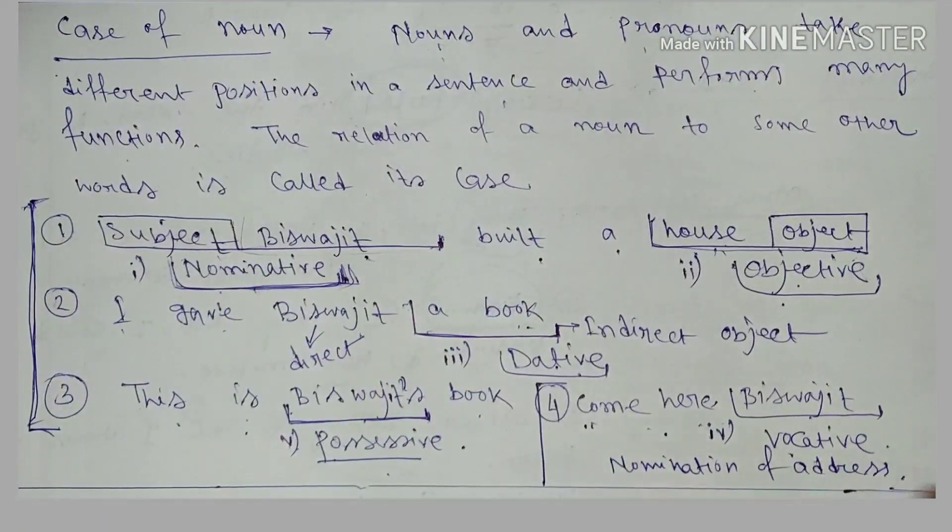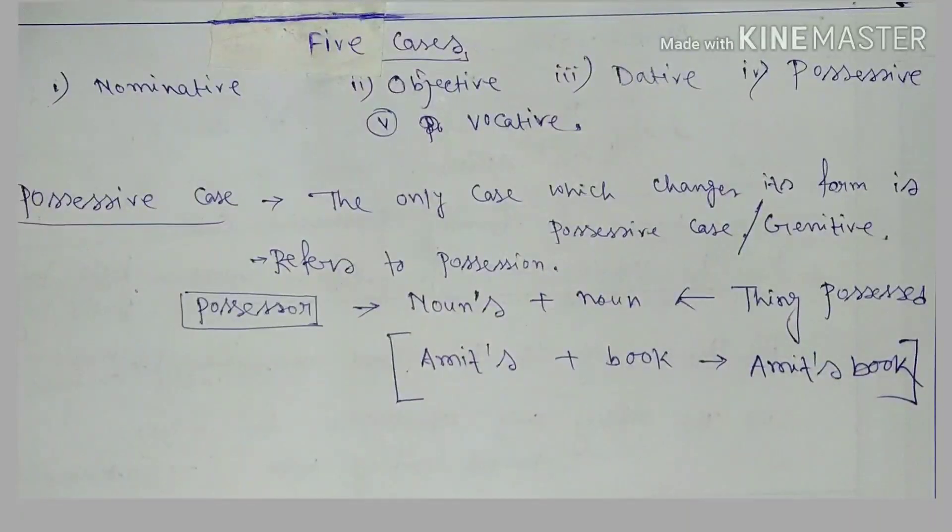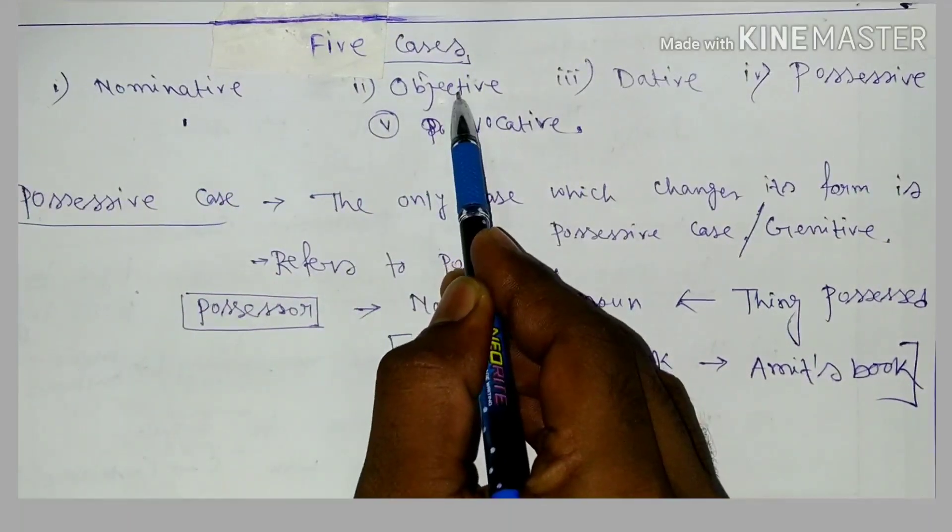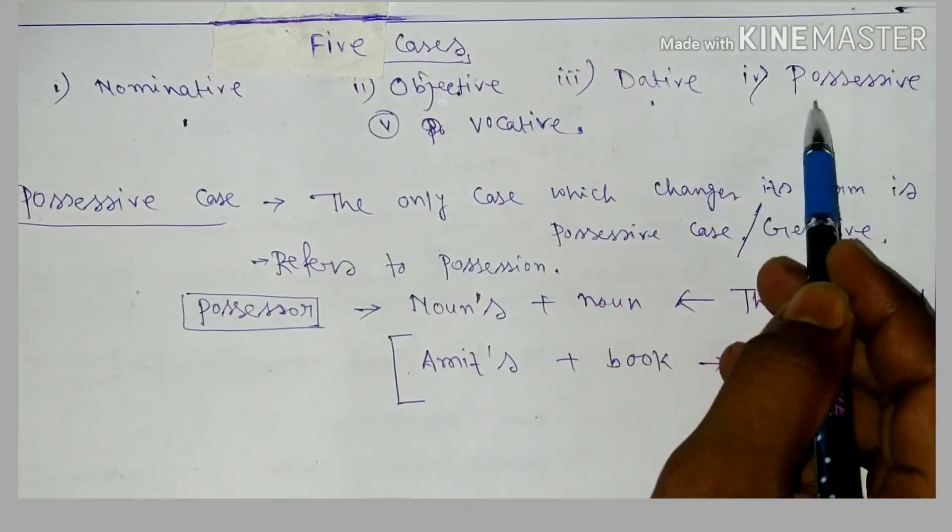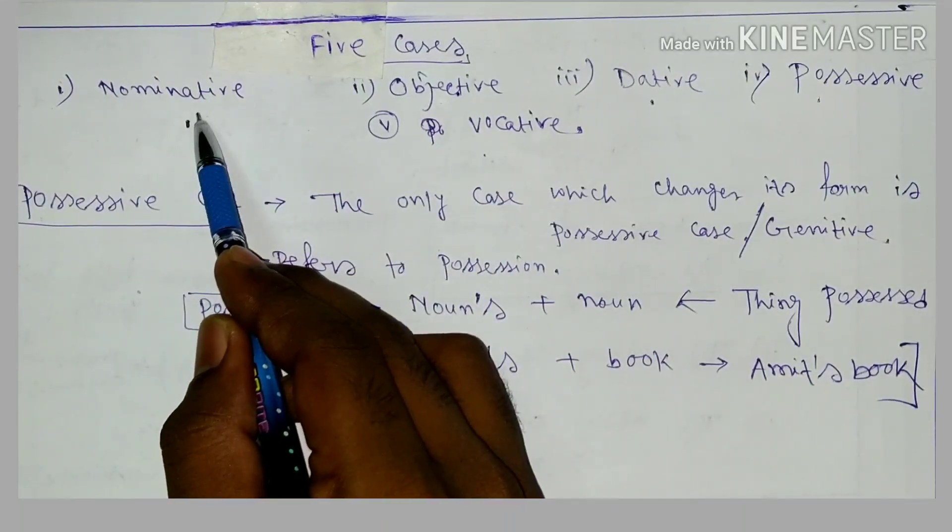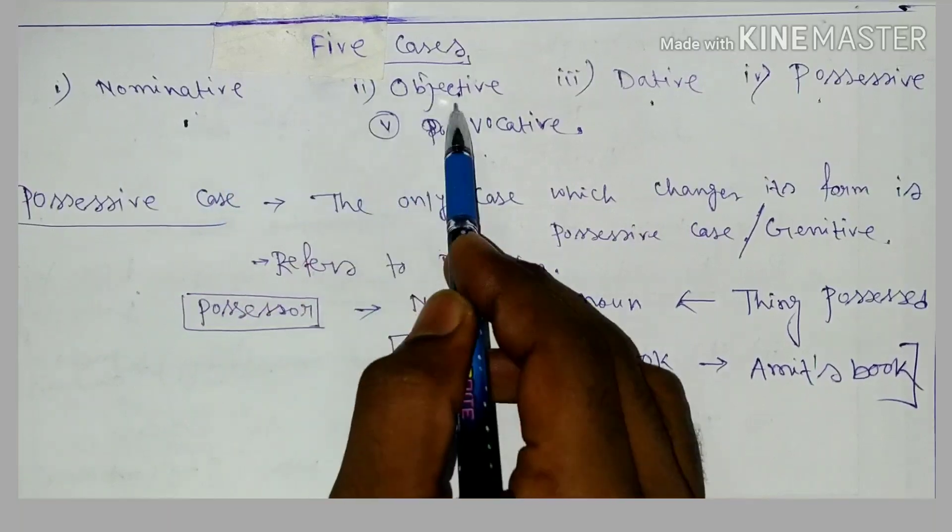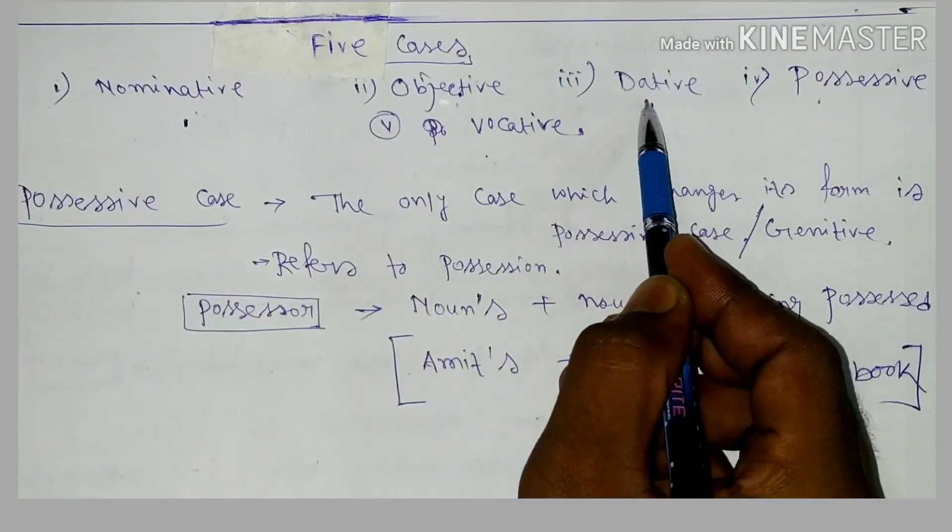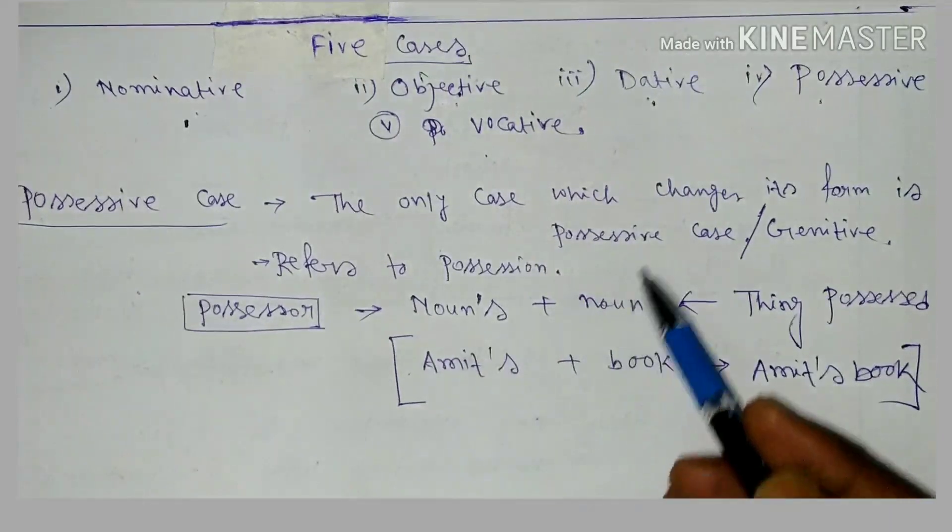So these are the five cases of nouns. First one is nominative, second one is objective, next is dative, the fourth one is possessive, and the last one is vocative. Nominative is the subject, objective is the object, and dative is the indirect object.